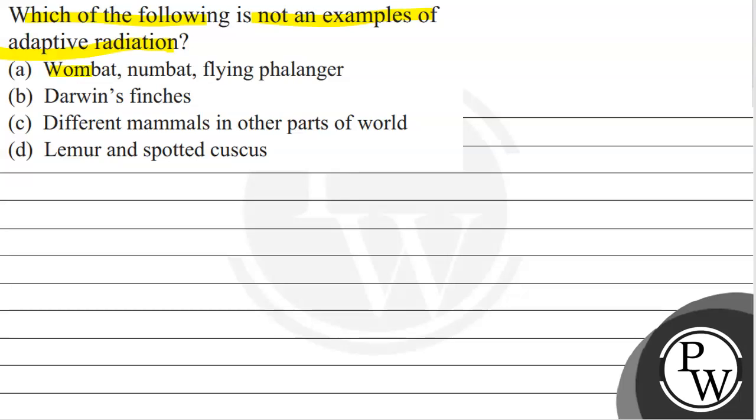So we have option A: wombat, numbat, flying phalanger. Option B: Darwin's finches. Option C: different mammals in other parts of world. Option D: lemur and spotted cuscus.